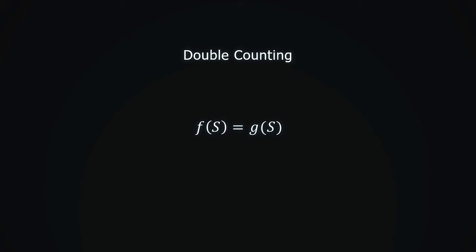Double counting is used in combinatorics when you want to prove that two formulas are equal. This way, with a little creativity, we avoid tedious inductive derivations, complicated algebraic transformations, and shuffling terms around.